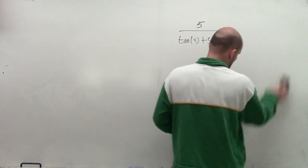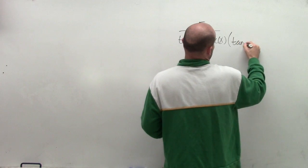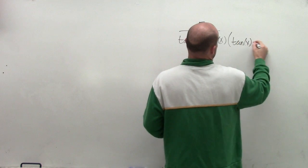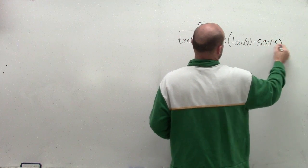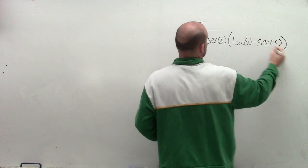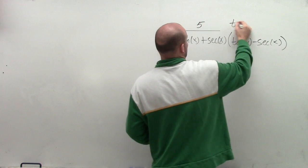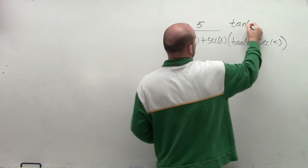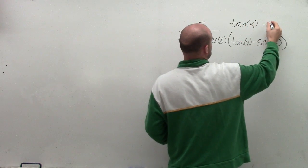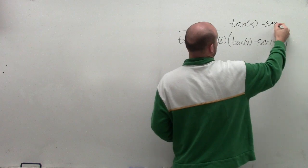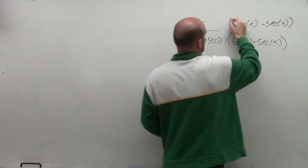We're going to multiply by the conjugate, which would be tangent of x minus secant of x. You have to make sure that whatever you multiply on the bottom, you also multiply on the top to keep proportional fractions.